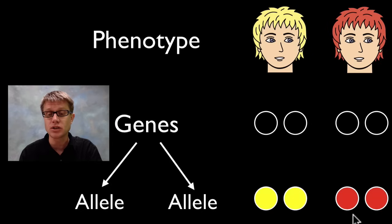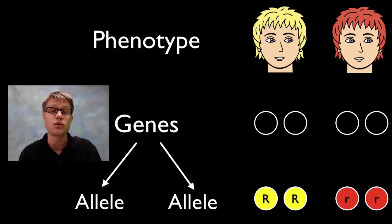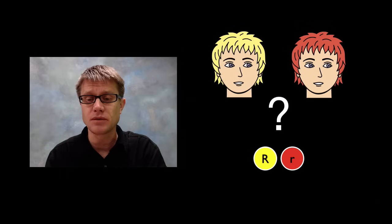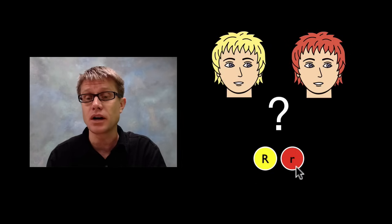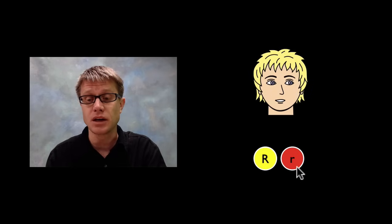When solving genetic problems, we use letters to represent alleles. Big R, big R stands for non-red genes, and little r, little r stands for red hair. But what happens if an individual has one non-red gene and one red gene? If you know anything about genetics, you know they're going to have non-red hair, because the red gene is recessive to the non-red gene.